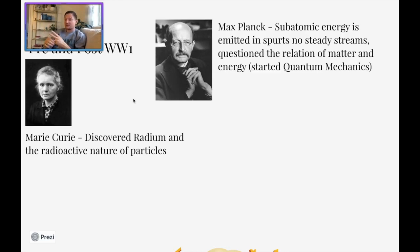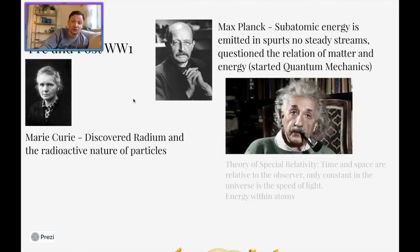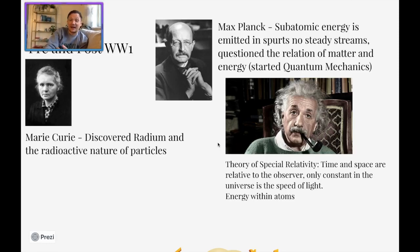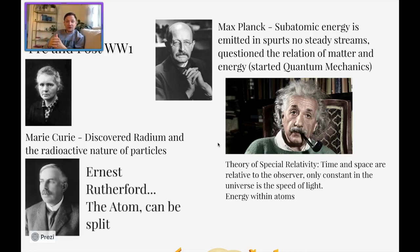Then you're going to have Max Planck, a German physicist who discovered that subatomic energy — like the energy emitted by atoms and other particles — is actually emitted in spurts, not in steady streams, which questions the relation of matter to energy, and begins to put in place ideas of quantum mechanics. And then of course you have the most famous scientist of all — Albert Einstein. Before World War I he patented his theory of special relativity: the relation of time and space are relative to the observer, and the only constant in the universe is the speed of light. He also begins to discover the energy within atoms and the fact that atoms and particles hold a massive amount of potential energy ready to be released. And then Ernest Rutherford realized that the atom can be split.